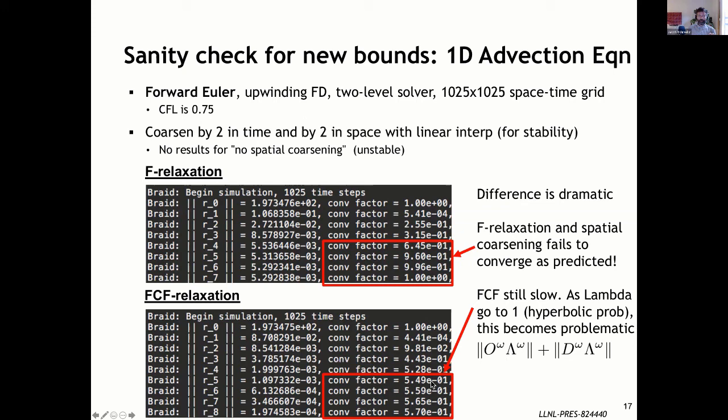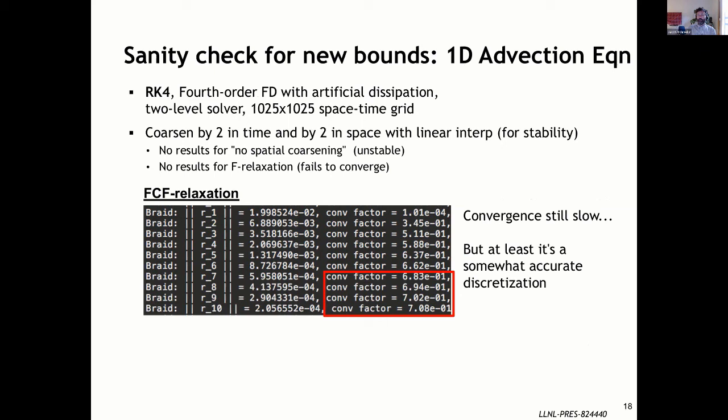If we switch to a more accurate discretization — RK4 with fourth-order finite differencing and artificial dissipation — the convergence factor deteriorates with FCF relaxation. No spatial coarsening is unstable, and F-relaxation again fails to converge. But with FCF, we are able to observe some convergence for at least a somewhat accurate discretization.